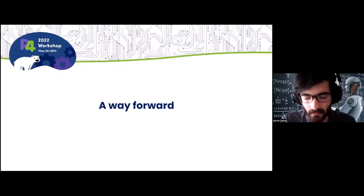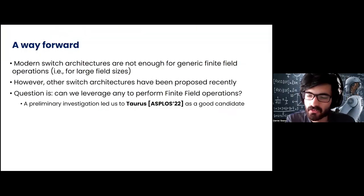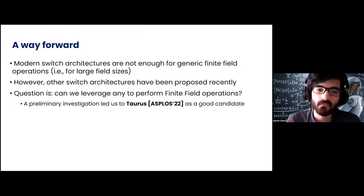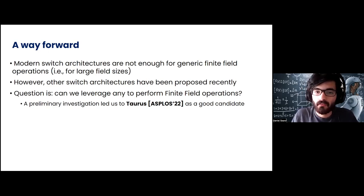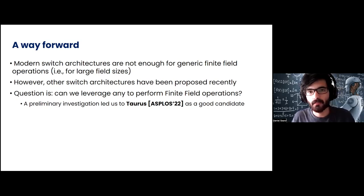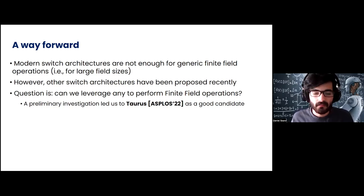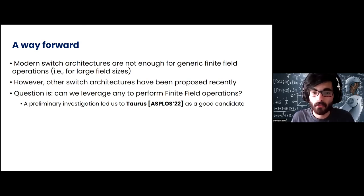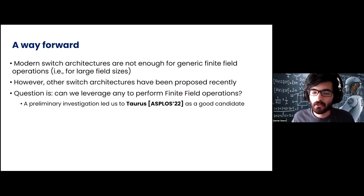So let's look at the way forward. We have seen that modern switch architectures are not good enough for generic finite fields — meaning fields larger than GF(2^8) or even GF(2^16). For cryptographic operations, in order to maintain the necessary properties, we need to work with at least 128 bits, so GF(2^128). But other switch architectures have been proposed recently, with more computational power, and the question we asked ourselves is: can we leverage any of these new architectures to actually perform finite field operations in larger field sizes?